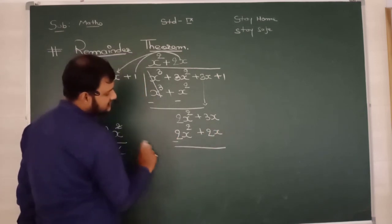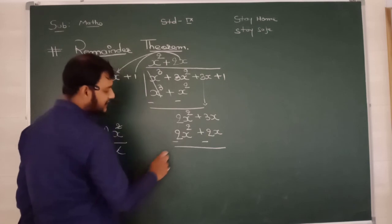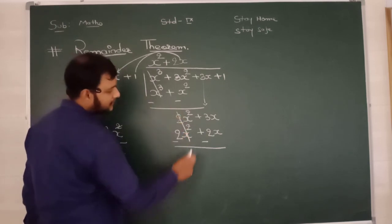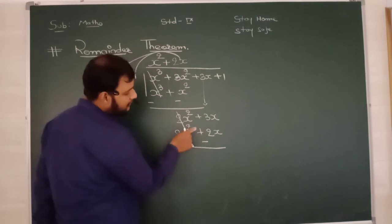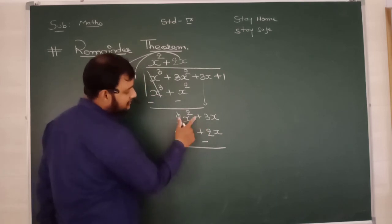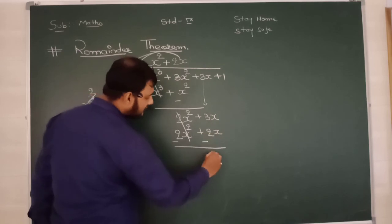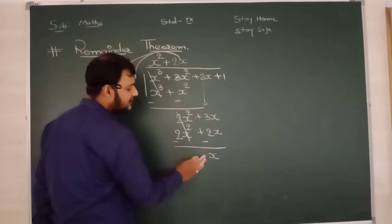Positive becomes negative, positive becomes negative. Deducted: plus minus - sign consideration - minus. So answer is x. Positive hai, so plus x. So it is x. Now the 1 will come down: plus 1. Please see here, this is x. x को हम x से divide करेंगे, so हो गया 1. So this is plus 1.